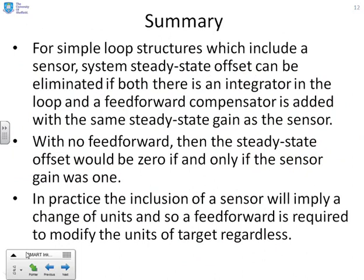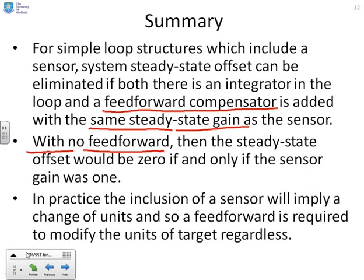In summary, for simple loop structures which include a sensor, the system's steady state offset can be eliminated if both there is an integrator in the loop and a feed forward compensator is added with the same steady state gain as the sensor. If there is no feed forward, then the steady state offset can be zero if and only if the sensor steady state gain is 1. In practice, the inclusion of a sensor will imply a change of units, so a feed forward is required to modify the units of the target regardless. You will probably find that for all practical loops, there is indeed a feed forward in there somewhere.